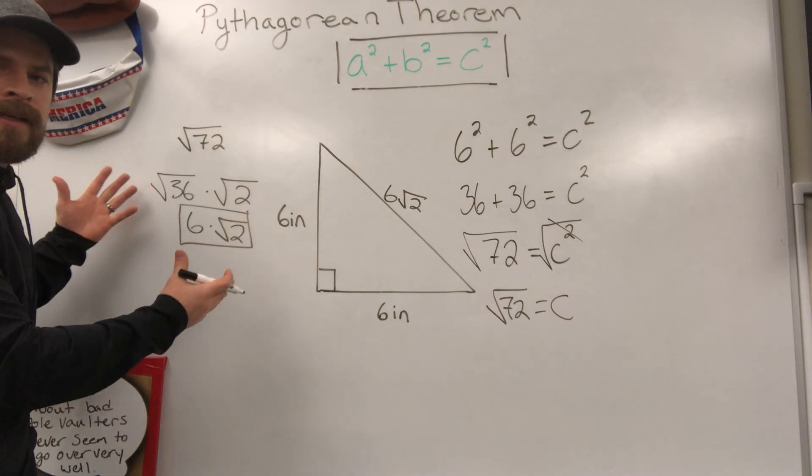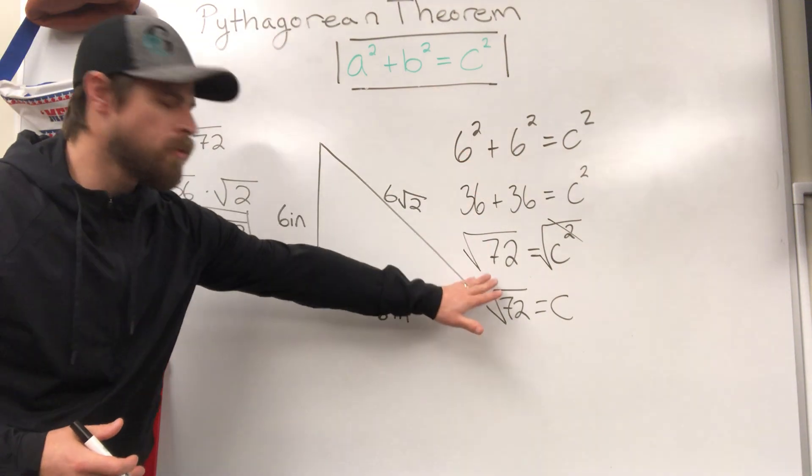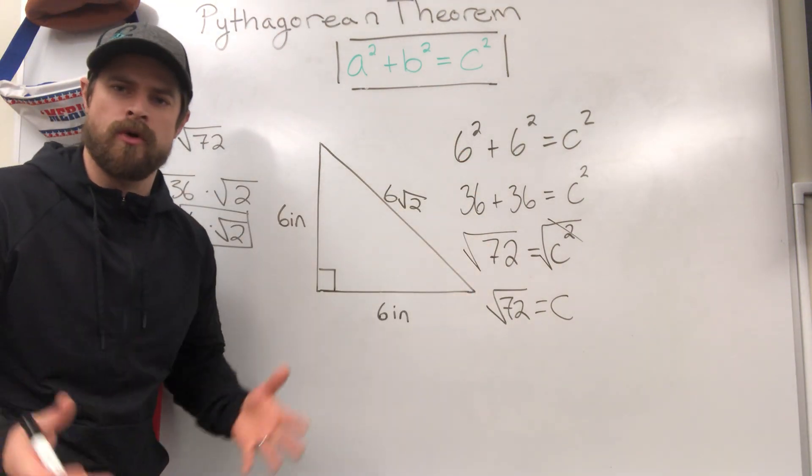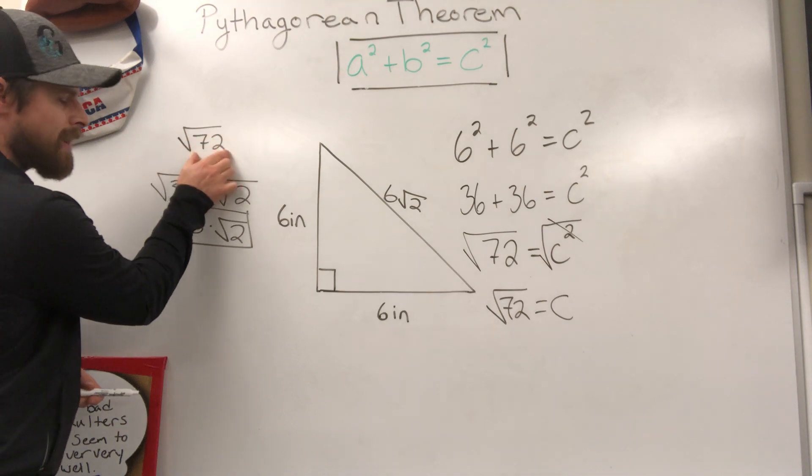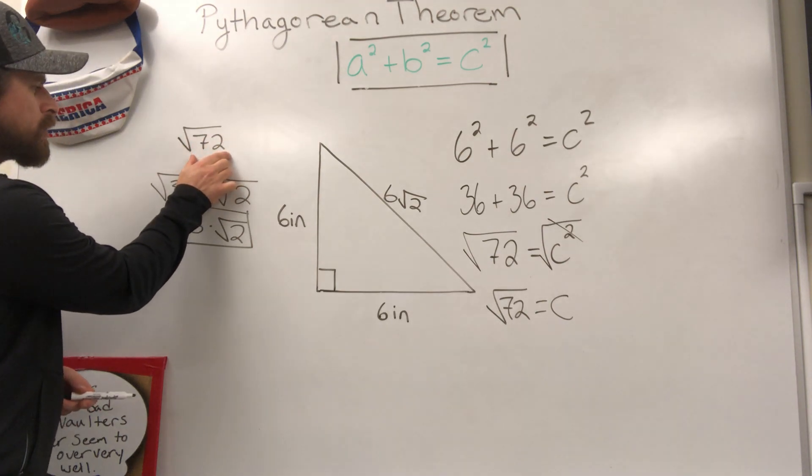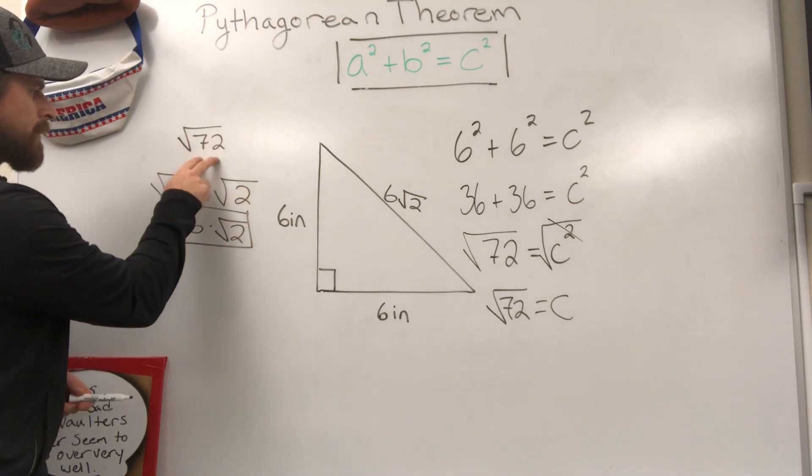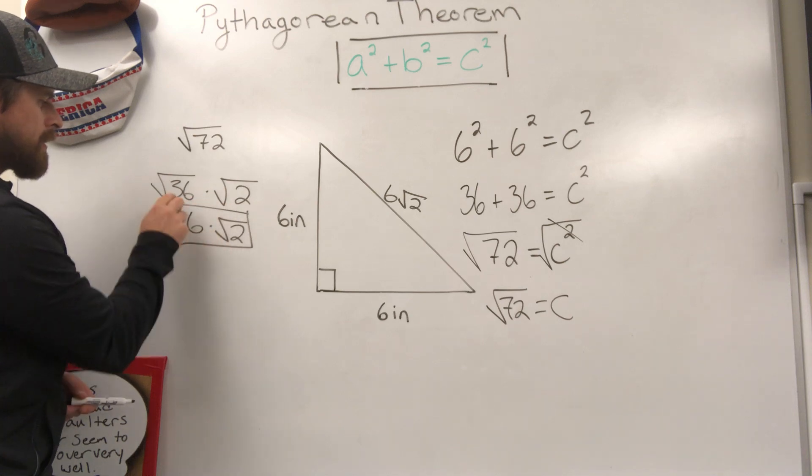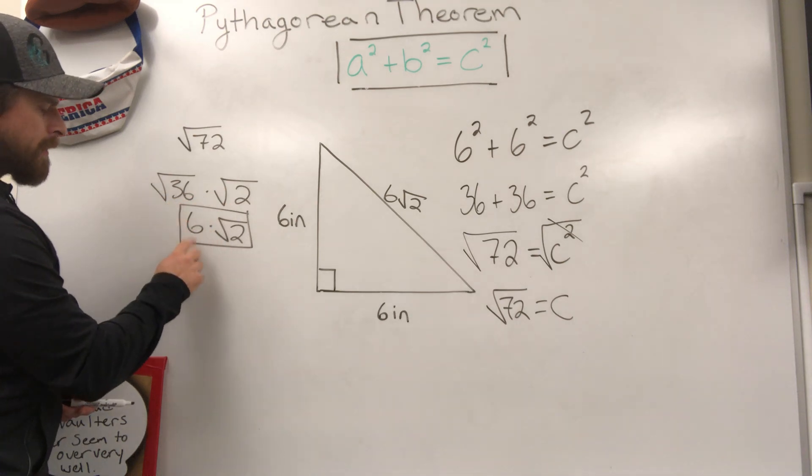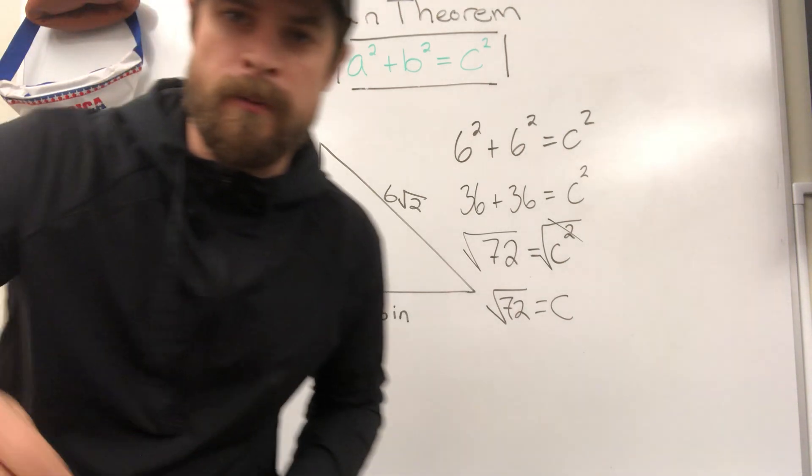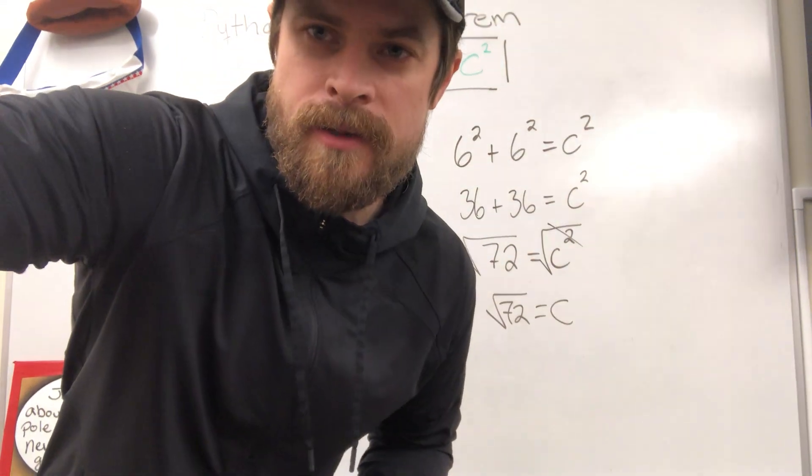Hopefully that makes sense. Again, work through the Pythagorean theorem as you always have, but now when you come up with a non-perfect square root, you need to simplify the radical. Think of two numbers that multiply together. If one of them is a perfect square, you're good. Good to go. All right. Study hard. Good luck on your upcoming test.